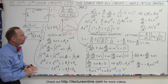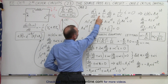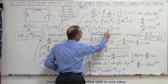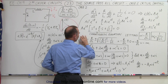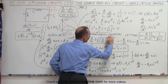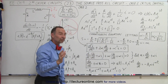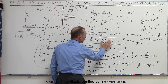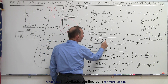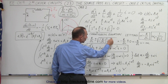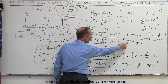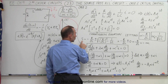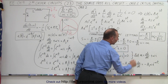Starting with the original differential equation, we end up with this characteristic equation, and when we solve the characteristic equation, we end up with this right here. But remember, in case number two, the quantity underneath the radical equals zero because alpha squared equals omega squared. So this simply goes to zero, and the solution to the characteristic equation is simply equal to minus alpha.